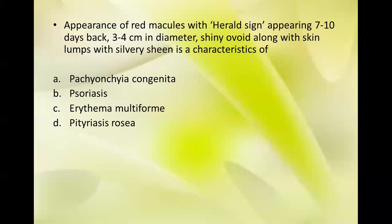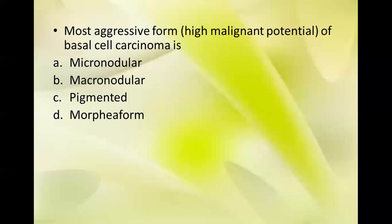Next question: appearance of red macules with a herald sign appearing 7 to 10 days back, 3 to 4 centimeters in diameter, shiny, ovoid, along with skin lesions with a silvery sheen — this is characteristic of which condition? The herald sign is characteristic of pityriasis rosea.